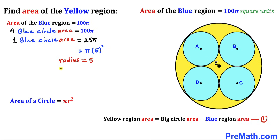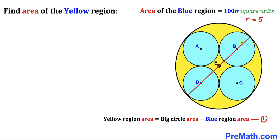Let's label the radius of the small blue circle as lowercase r, equal to 5. Now let's focus on the diameter of the big circle. We know one radius of a blue circle on one side is 5, and likewise another radius on the other side is 5. Our remaining task is to calculate the distance BD in order to find the diameter.